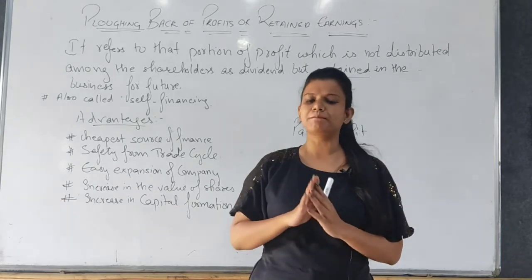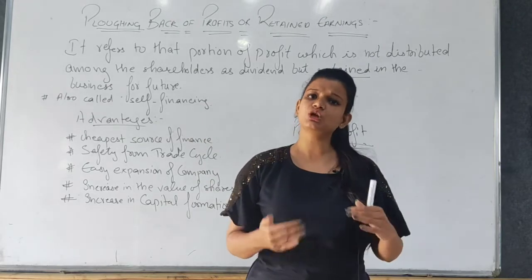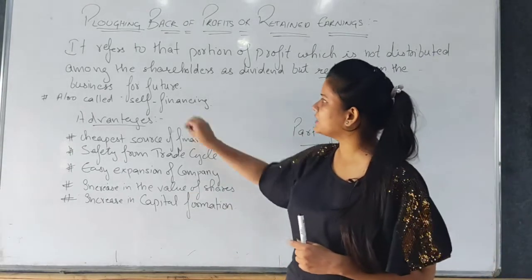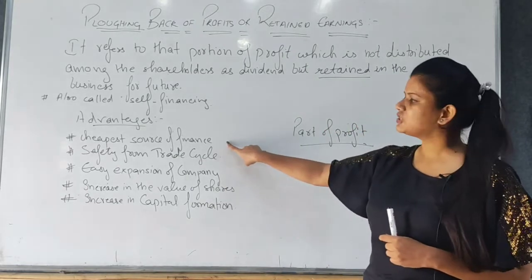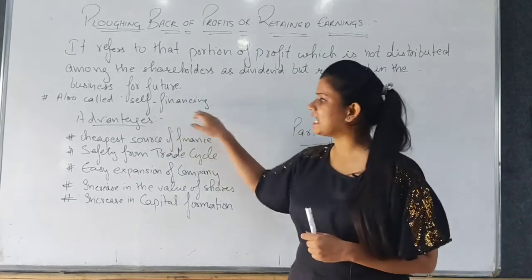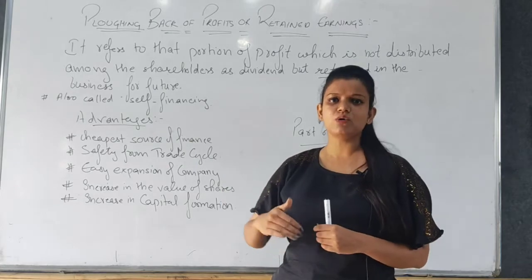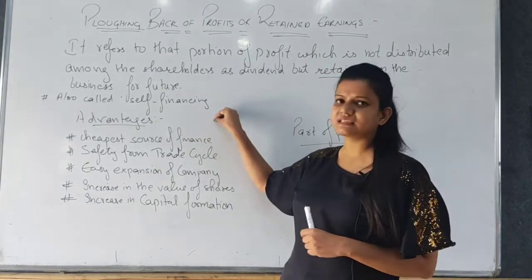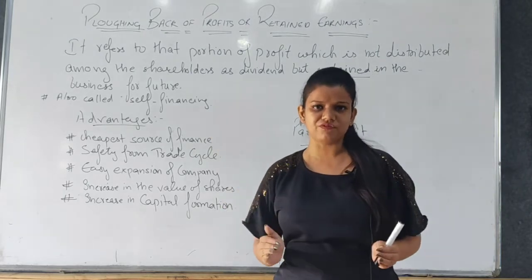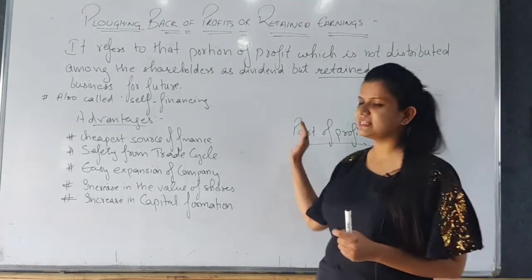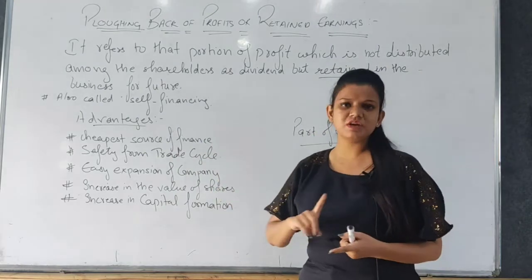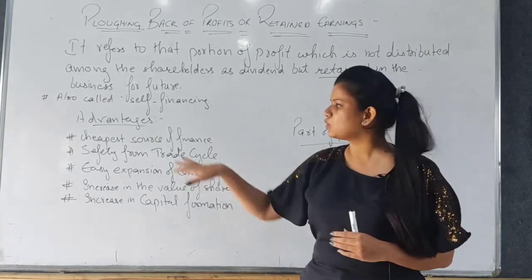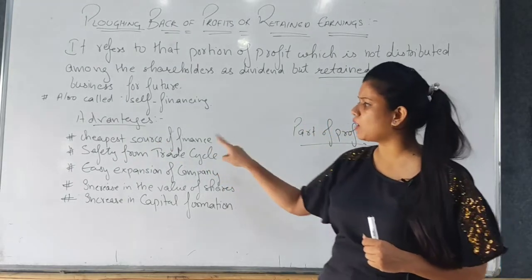It is called self-financing because the company does not have to issue anything to any third party — it is the company's own profit that it has retained as a reserve for future needs. Now, the first advantage of ploughing back of profits is that it is the cheapest source of finance. The company is self-financing — it does not take money from outside, does not issue shares, does not take on debt. There is no cost involved, no interest to pay, and no dividend to distribute.